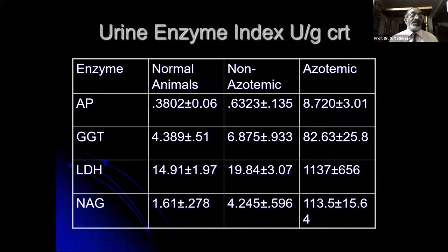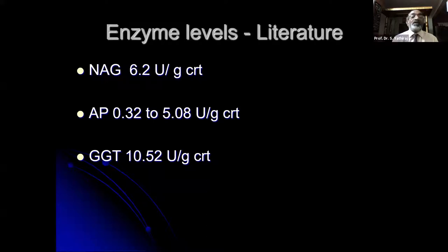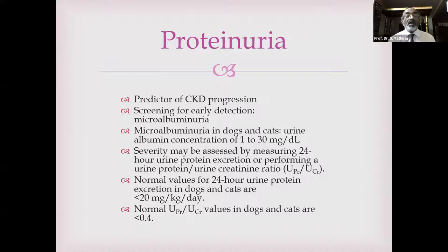Fluid therapy: a balanced polyionic solution — lactated Ringer's solution — is appropriate in most situations. Physiological saline (0.9%) contains no potassium and is suitable when treating hyperkalemia. Fluids low in sodium are more appropriate after rehydration. The volume of rehydration is calculated as: body weight in kg × estimated percentage dehydration = fluid deficit in liters. Maintenance fluid therapy is commonly regarded as 66 mL/kg/day, varying based on clinical situation.